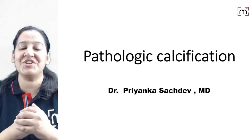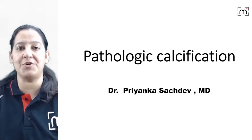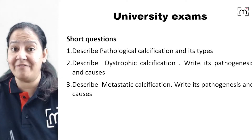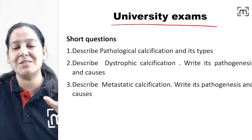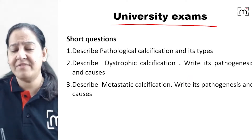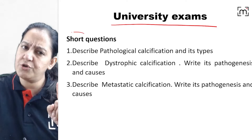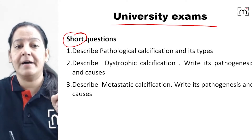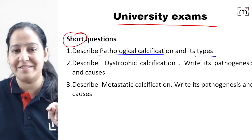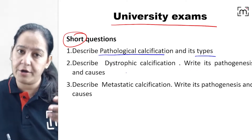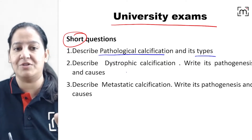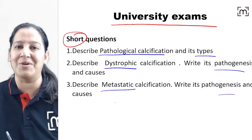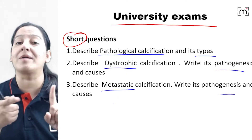In this session I am going to discuss a very important topic: pathologic calcification. Before starting, let's have a look at the university exam questions which usually come from this topic. Usually short questions come from pathologic calcification. You can be asked to define pathologic calcification along with its types, or specifically asked about one type — dystrophic or metastatic — along with its pathogenesis, causes, and diagrams.